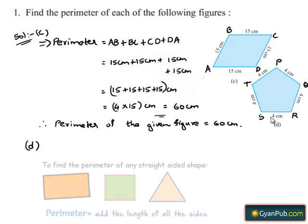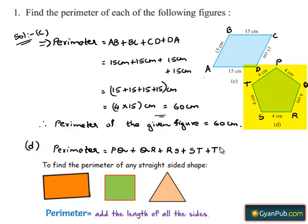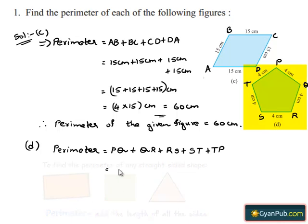So the perimeter of figure D is nothing but the sum of the sides. Perimeter is equal to PQ plus QR plus RS plus ST plus TP. From the figure, we can observe that the length of each side — PQ, QR, RS, ST, and TP — is 4 centimeters.